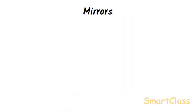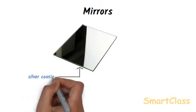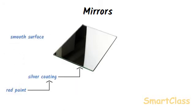Mirrors: An object which reflects light well is called a mirror. A highly polished and shiny metal object reflects light well and acts as a mirror. A plain mirror is a thin, flat, and smooth sheet of glass having a shiny coating of silver metal or aluminium metal on one side. The silver coating is protected by a layer of red paint. The glass sheet of a plain mirror offers a smooth surface, which produces regular reflection and helps in forming a clear image.